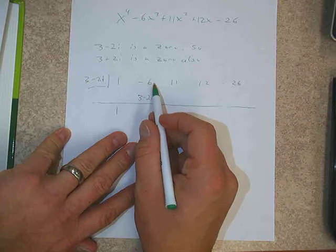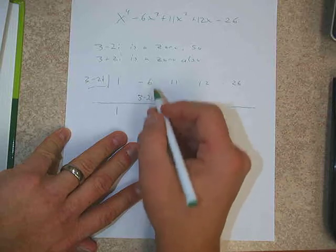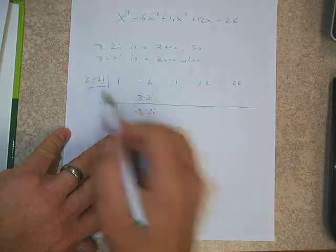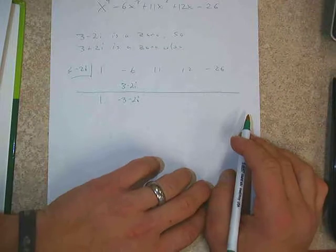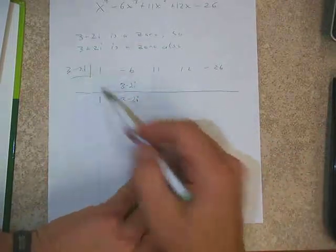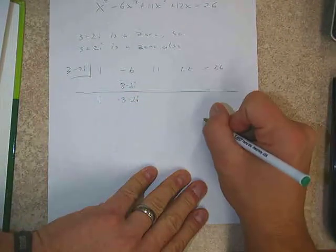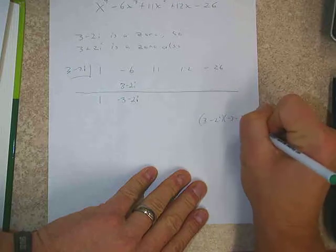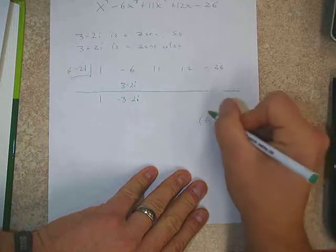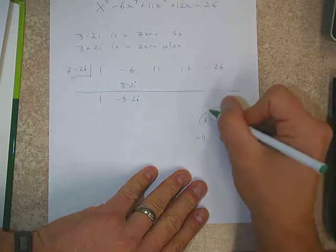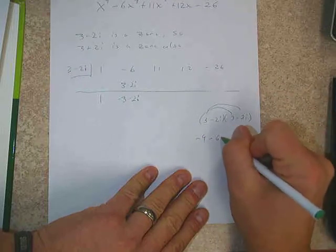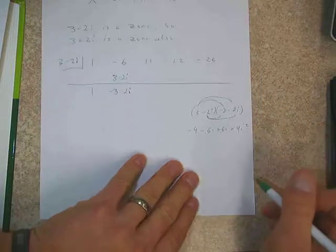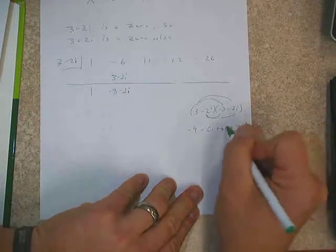If we bring down our 1 and multiply — 1 times (3 minus 2i) gives us 3 minus 2i. Remember negative 6 is of the form A plus Bi, just with zero as its imaginary part. When we add these two, we add the real parts and get negative 3 minus 2i. Then for the next multiplication we're going to use FOIL on those two.